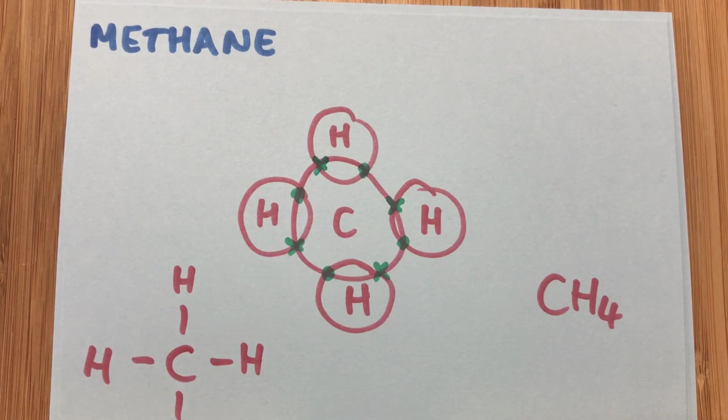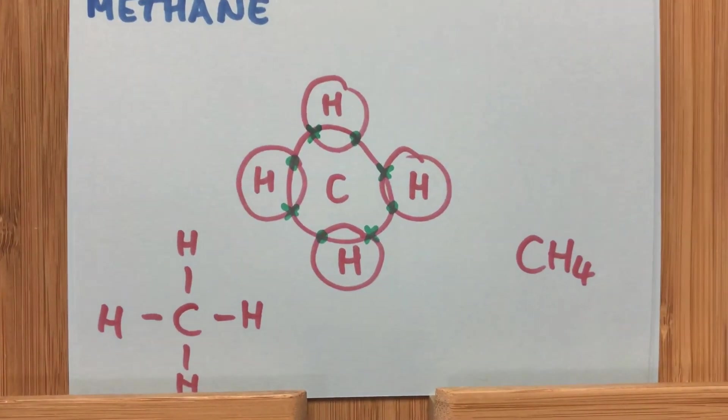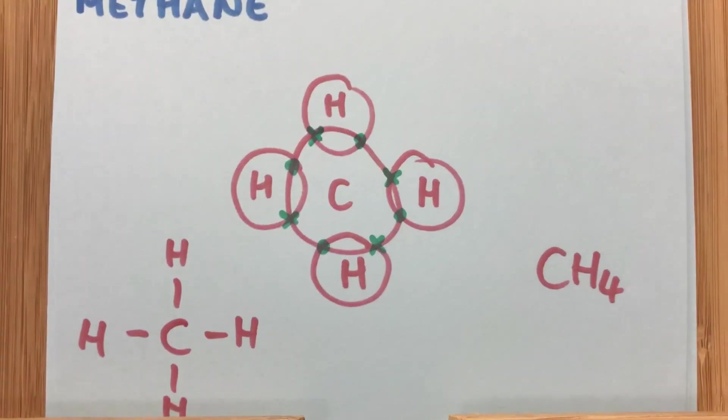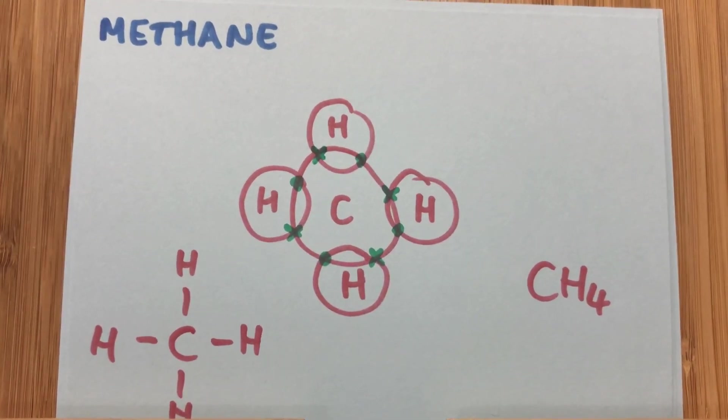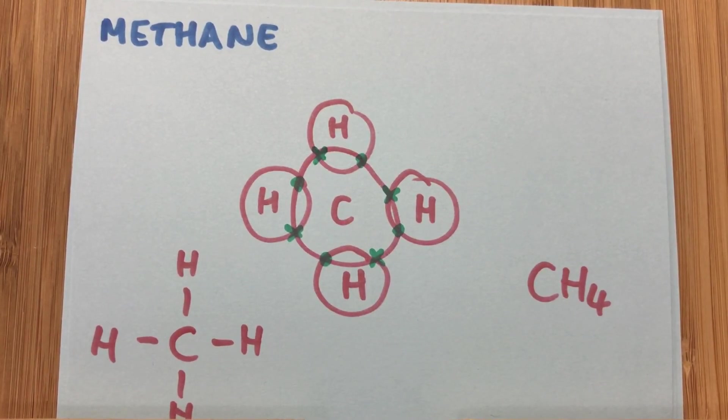We can't quite see the end of that diagram, so let's just pull that out a bit. There's the stick diagram. Carbon now has eight electrons in its outer shell. So that's nice and stable, full outer shell. And each hydrogen has two electrons in its outer shell. And we call that CH4.